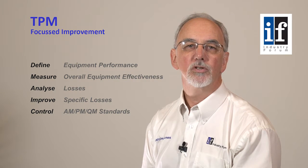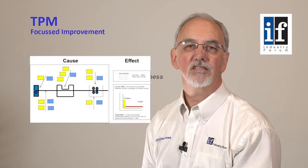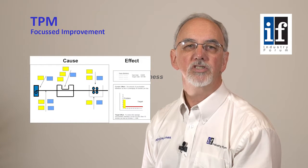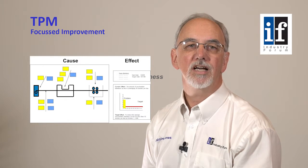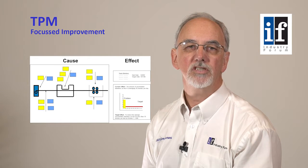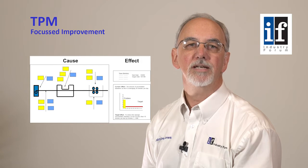These can include cause and effect analysis using fishbone or equipment diagrams, process capability analysis using tools such as Famica and statistical process control methods, and specific TPM tools.